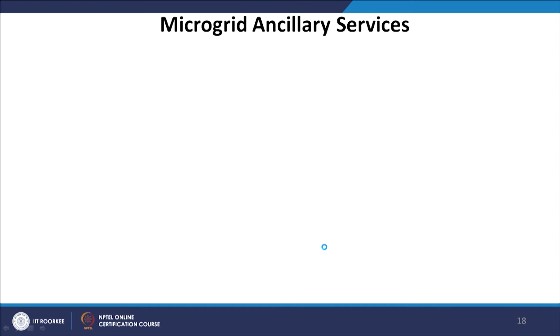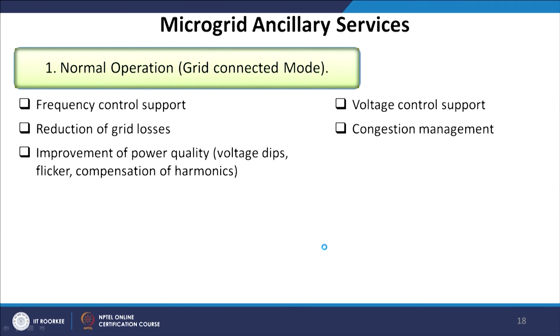One very important aspect is microgrid ancillary services — how a microgrid can help the system to have ancillary services such as frequency regulation. During normal operation in grid-connected mode, a microgrid can provide frequency control support, because frequency keeps changing based on load. A microgrid can support or complement frequency variation, is expected to reduce grid losses, improve power quality through compensation of harmonics, provide voltage control support, and finally provide congestion relief or management for low voltage networks.